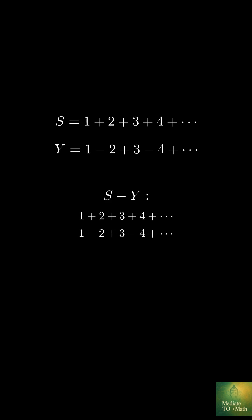1 minus 1 equals 0. 2 minus negative 2 equals 4. 3 minus 3 equals 0. 4 minus negative 4 equals 8. And so on. We get 0 plus 4 plus 0 plus 8.